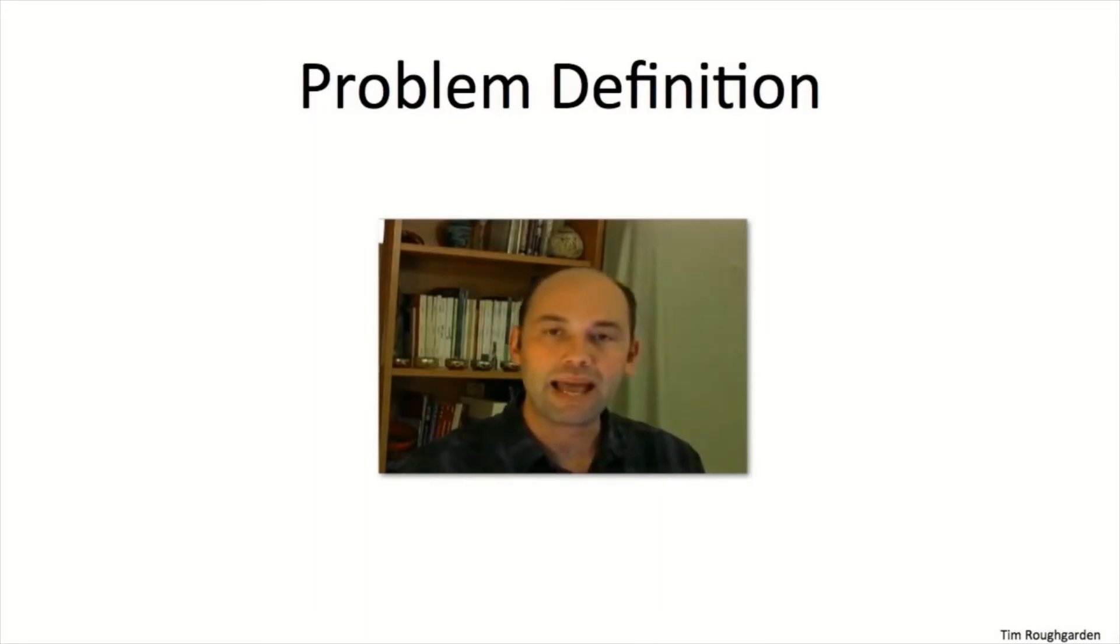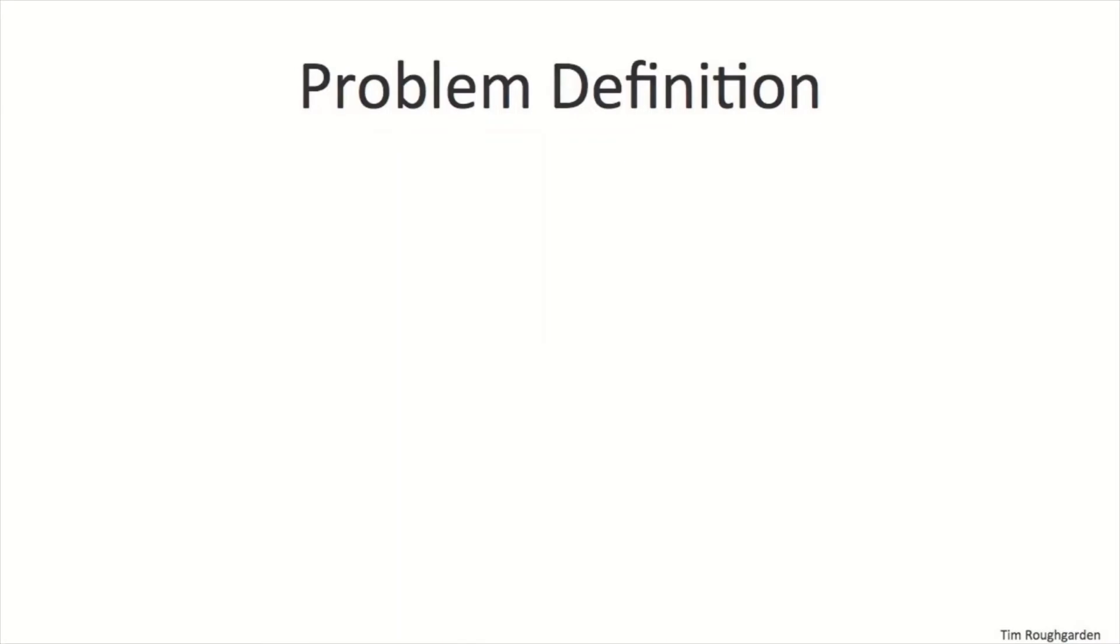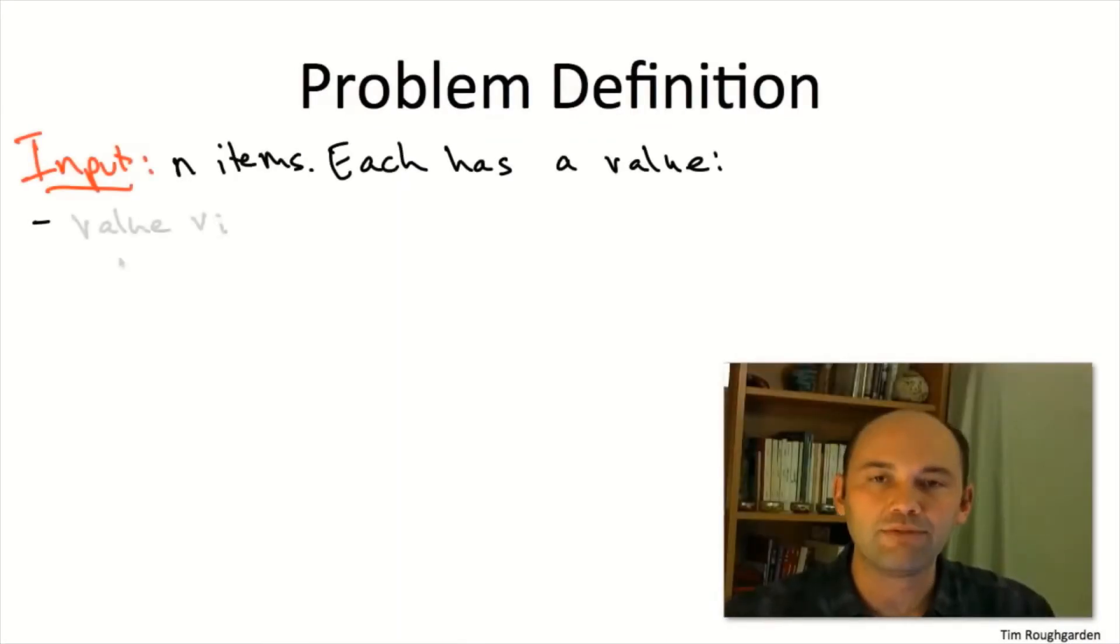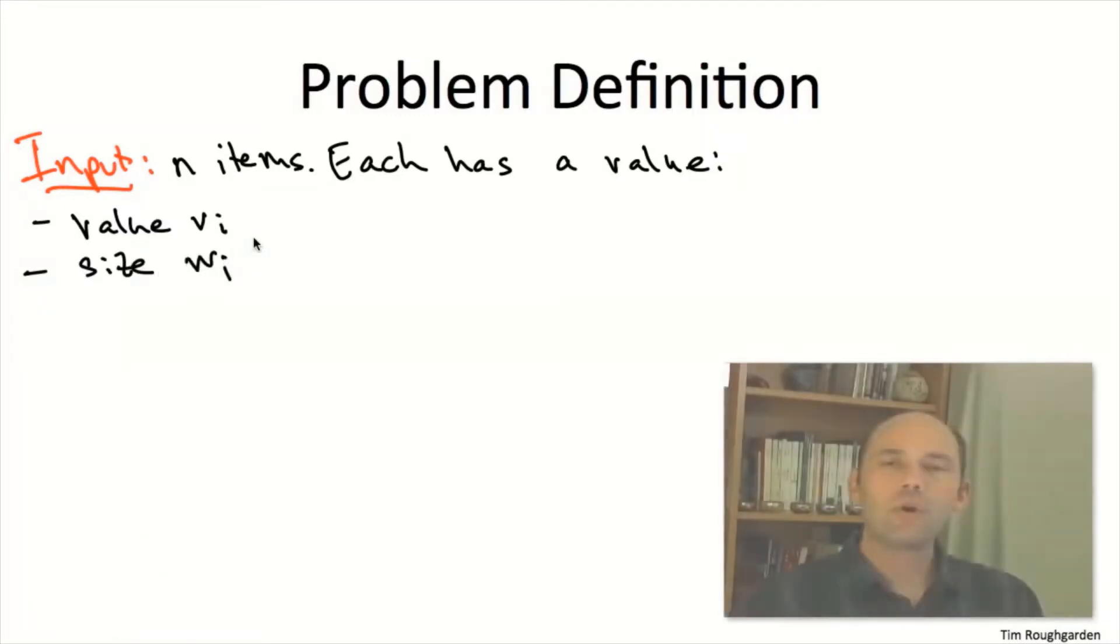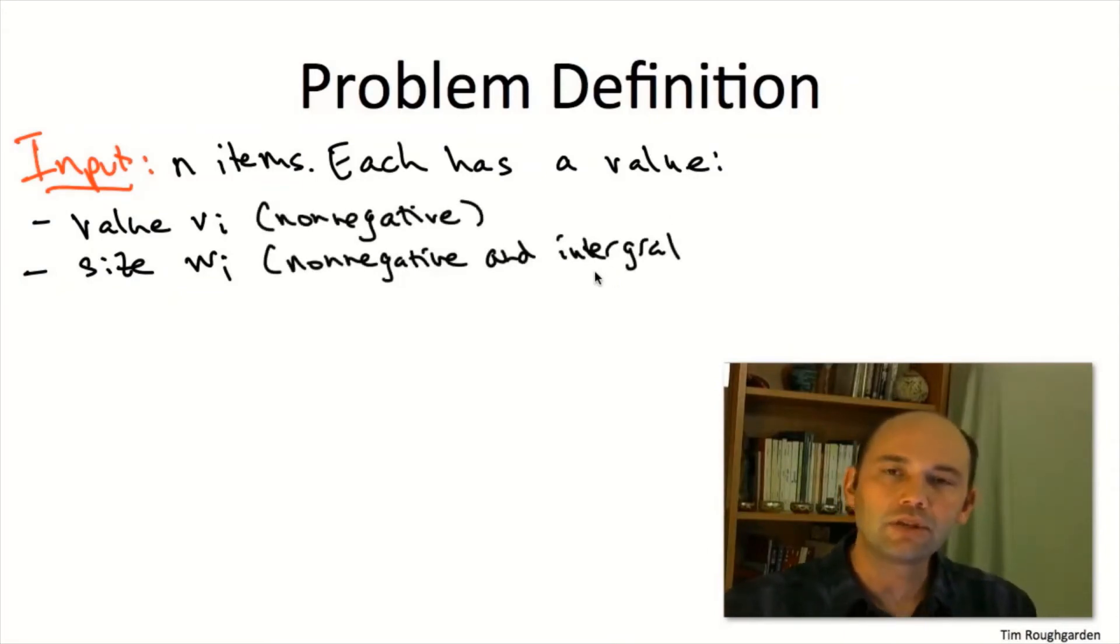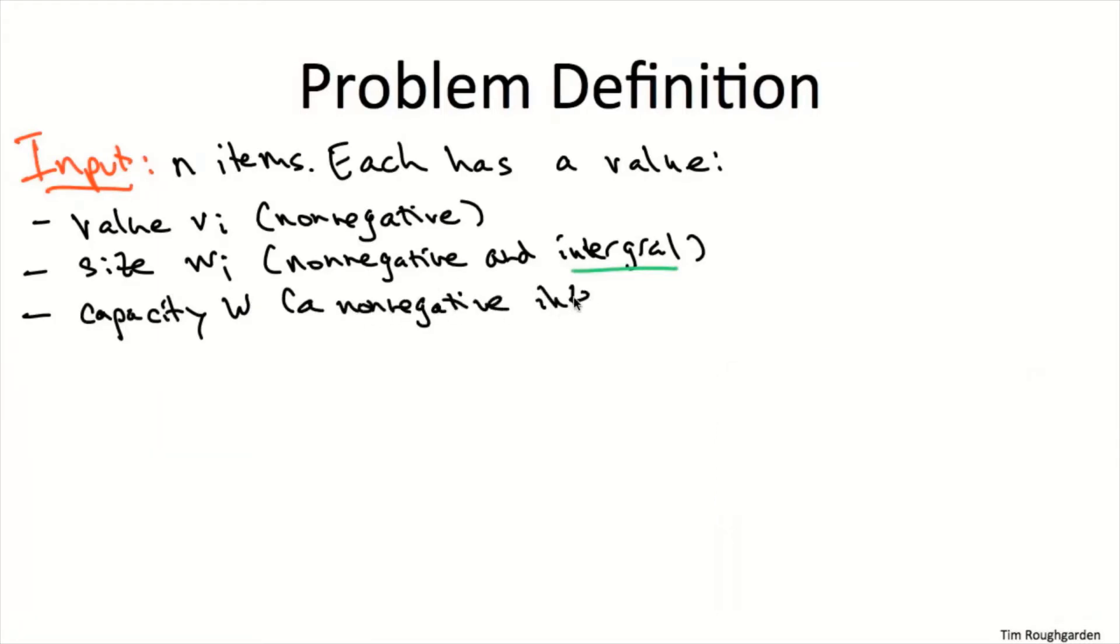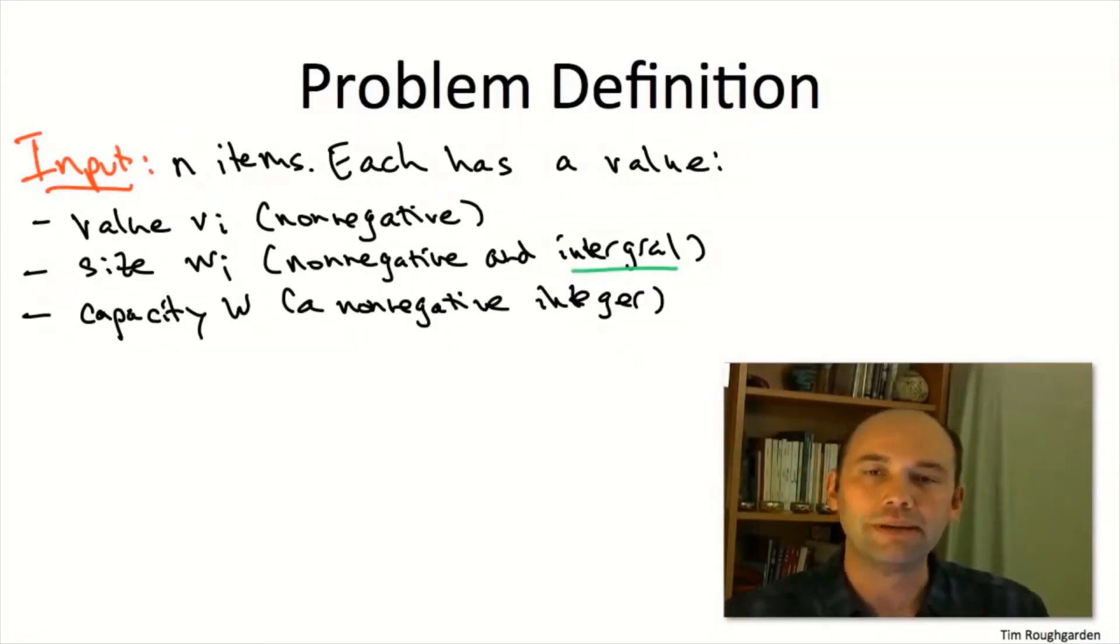Let's jump right into the definition of the knapsack problem. The input is given by N items. Each item has a value v_i, the more the better for us, and also a size w_i. We're going to assume that both of these are non-negative. For the sizes, we'll make an additional assumption that they're integral. In addition to these 2n numbers, we're given one more, called a capacity W. Again, we'll assume this is both non-negative and an integer.